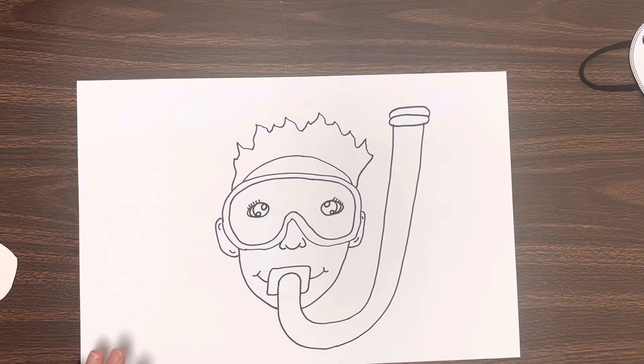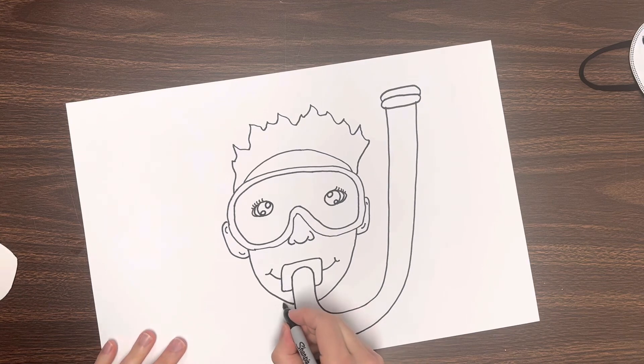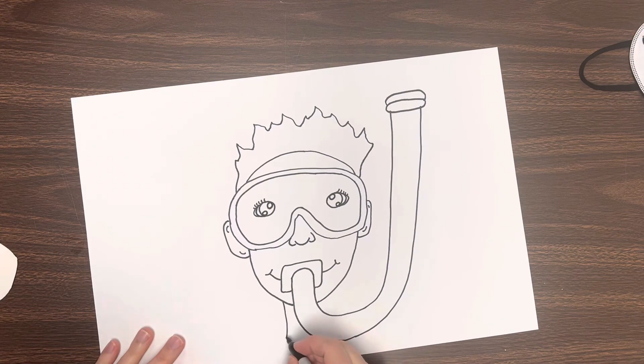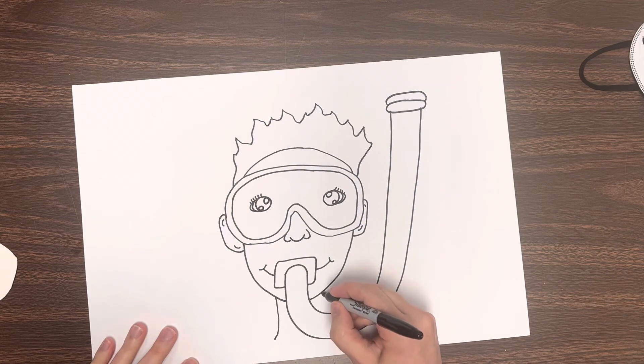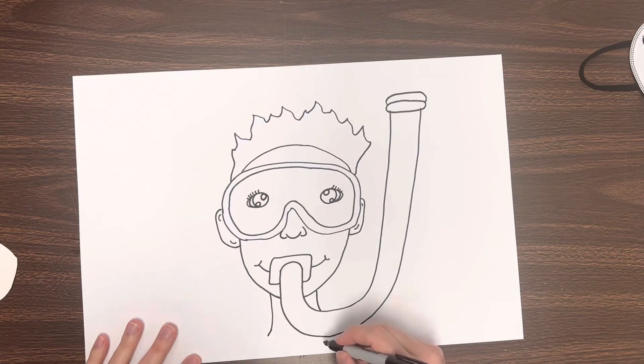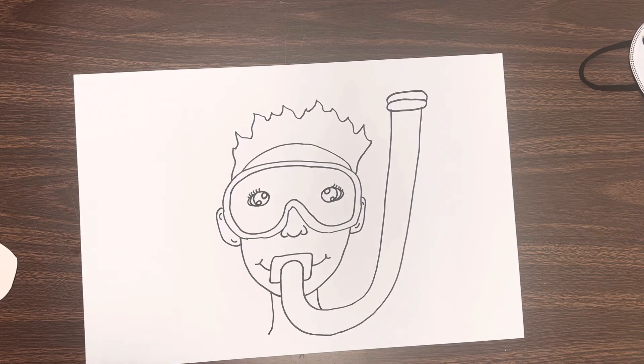Now, next up, we're going to add the neck and shoulders kind of coming down here. So I'm going to draw a little curved line. Come out just a little bit. Now, it's going to go behind our snorkel, just like before. I think it would probably under right about there. Cool. Now, I don't wear a shirt when I go swimming, so I'm just going to have bare shoulders.